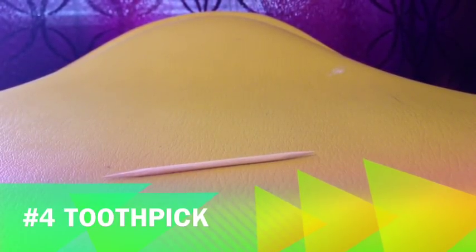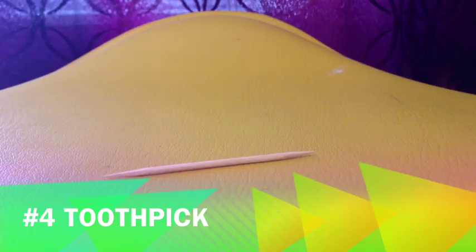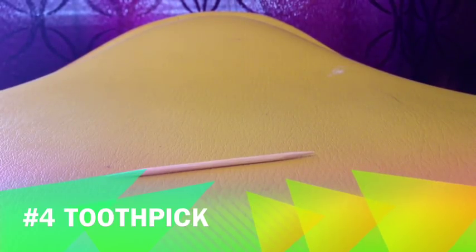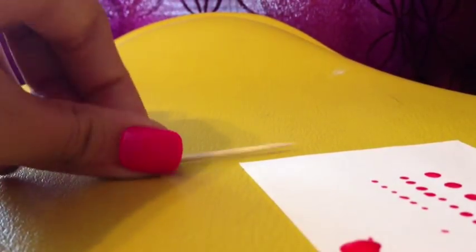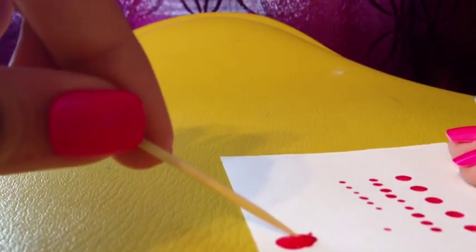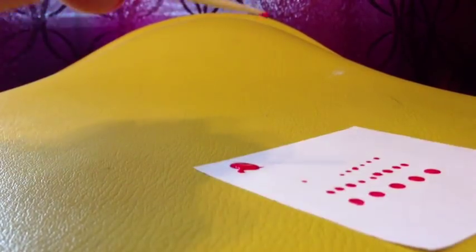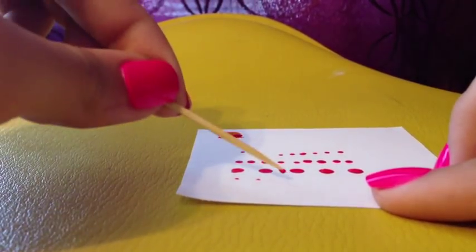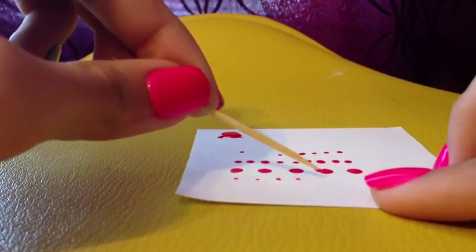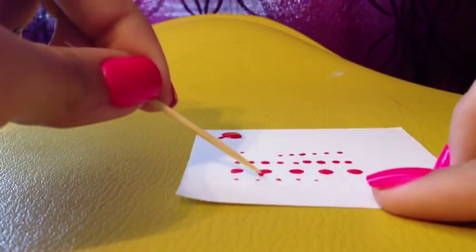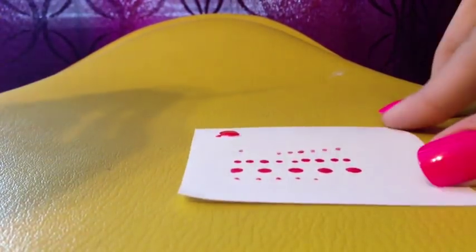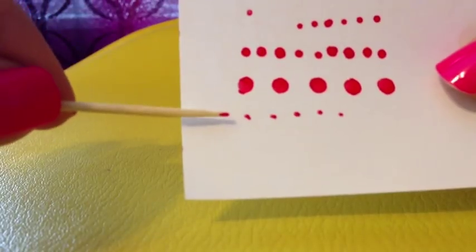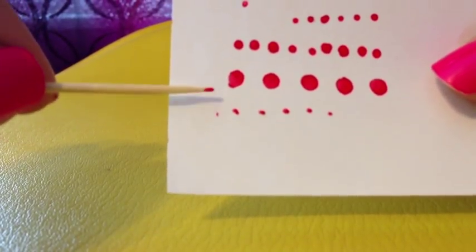The fourth way is a toothpick. I feel like this is the most common way that people automatically think of is oh I'm just going to use a toothpick. But this is my least favorite way. I think it's a lot harder to use and control and the dots you get with it are just so small, but I figured I'd throw it in because it's always an option just never one for me. You can see right here how small they are compared to every one of the other ways.